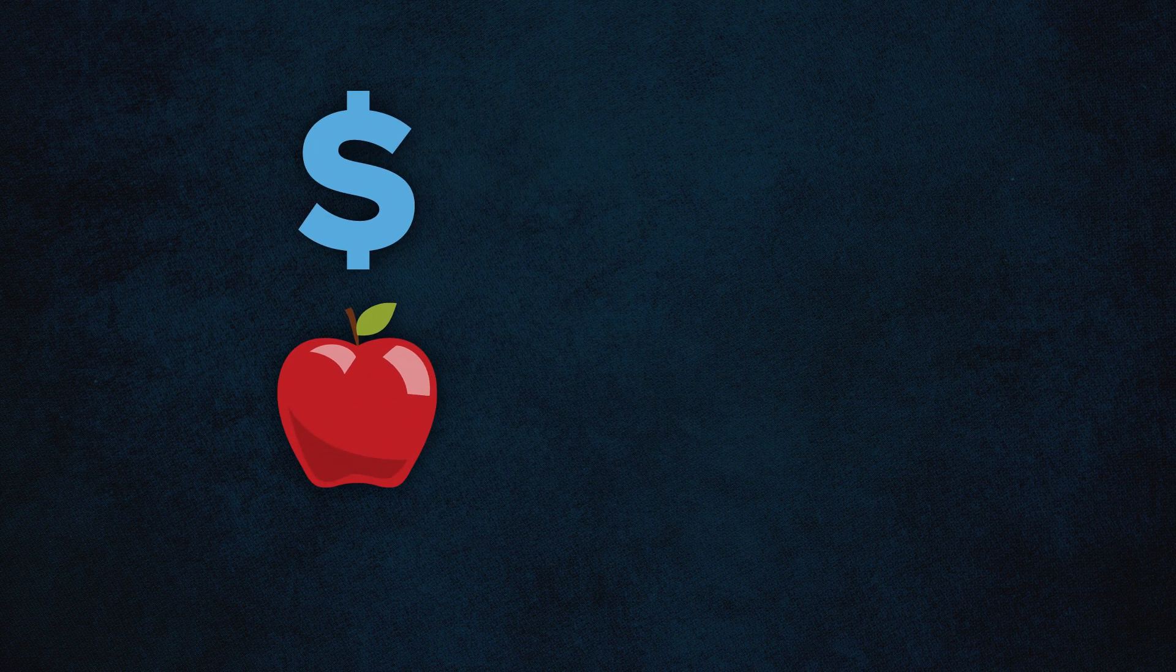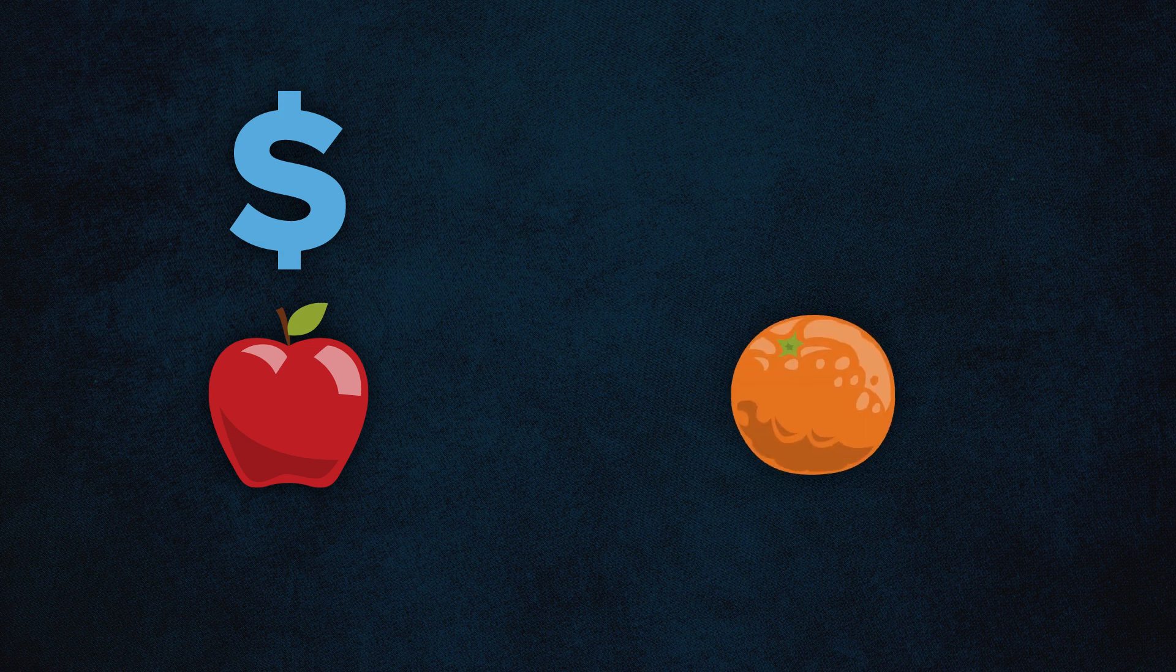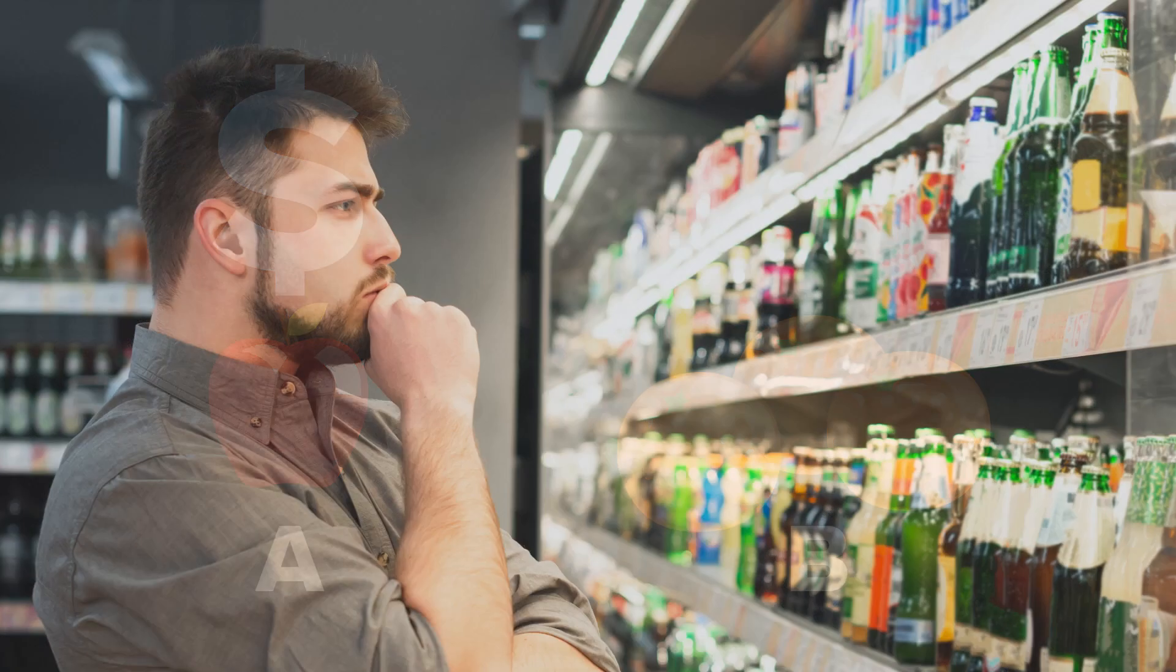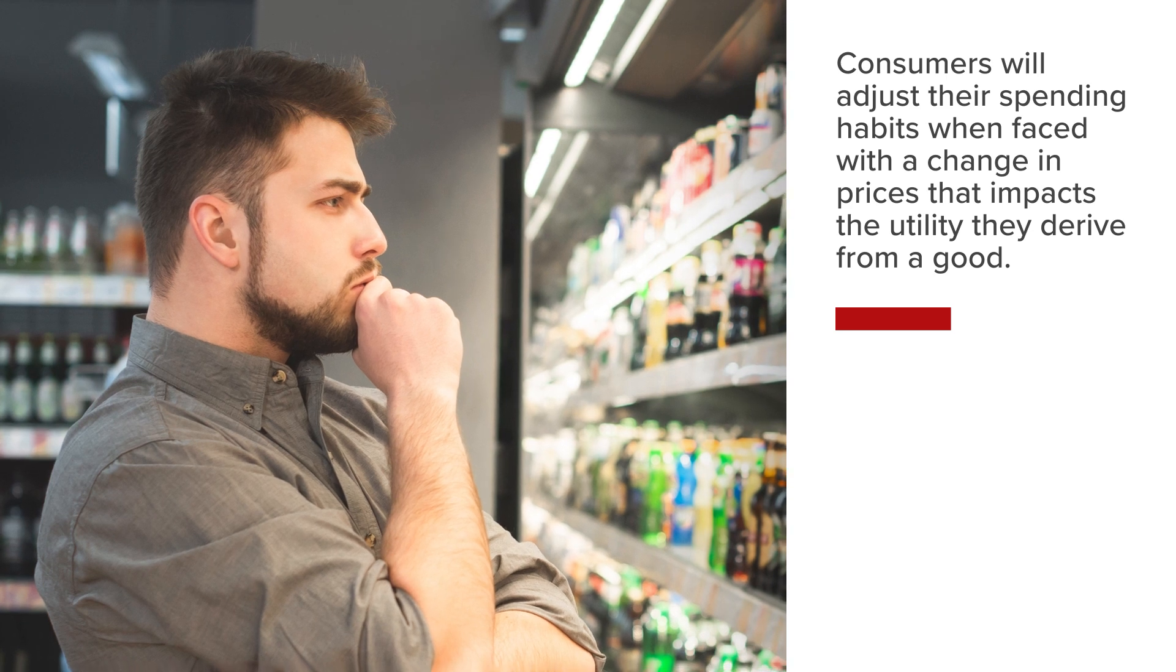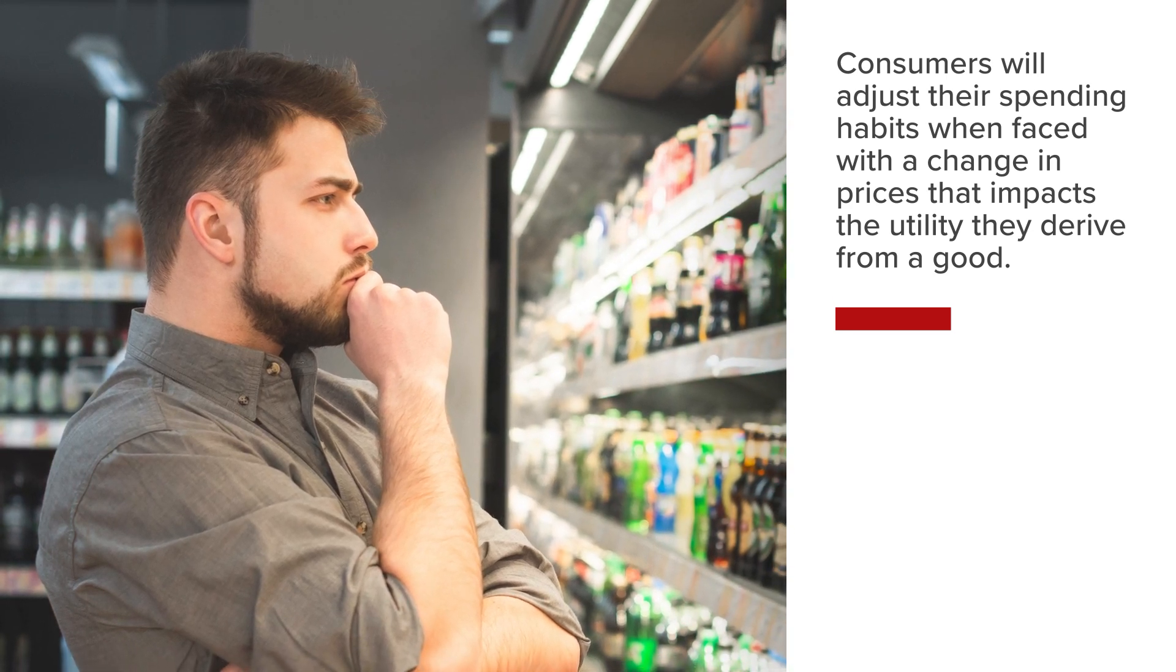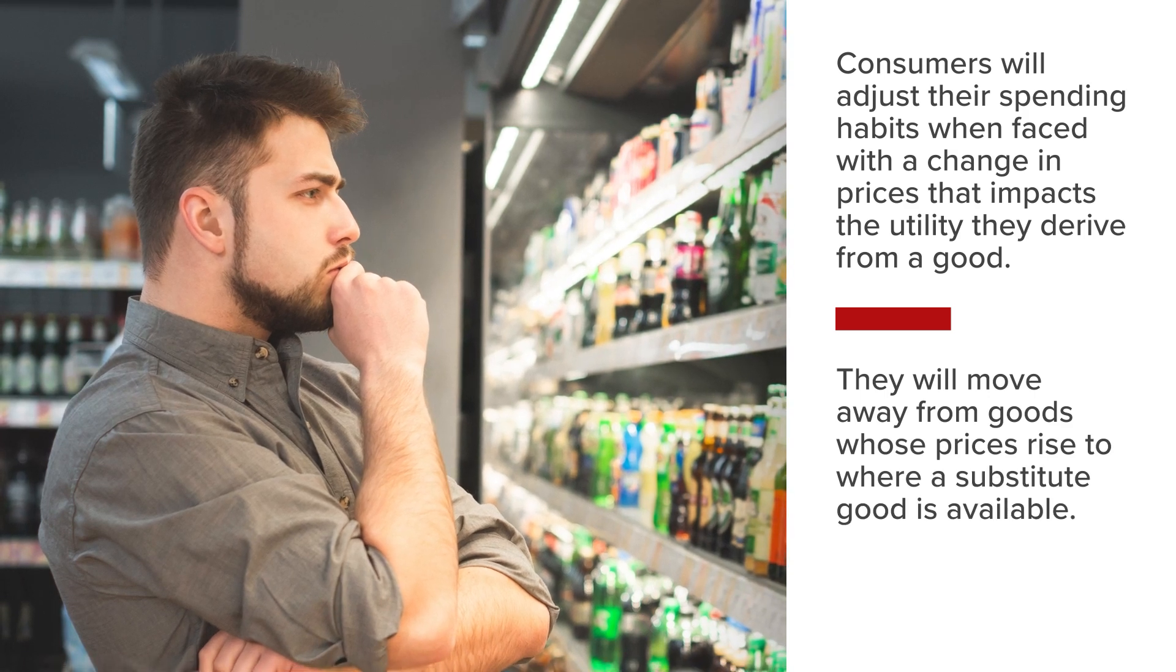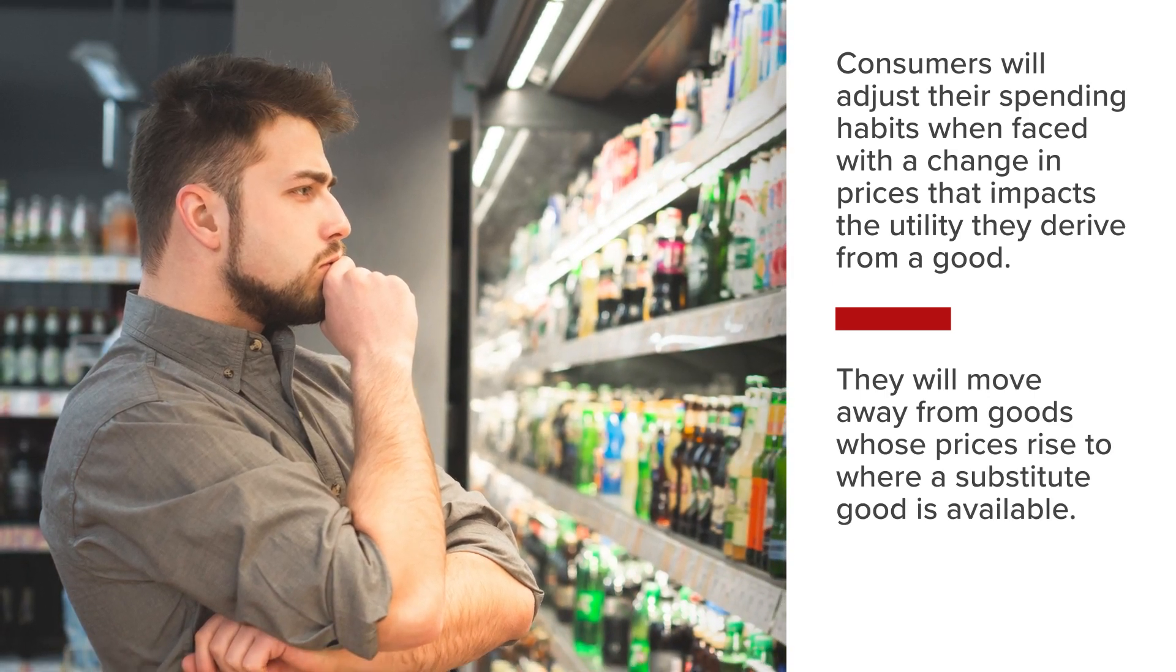Inextricably linked here is the so-called substitution effect, which observes that should the price of good A rise, demand for a similar good B will increase. Consumers will adjust their spending habits when faced with a change in prices that impacts the utility they derive from a good. Such changes will involve moving away from goods whose prices rise and where a substitute good is available.